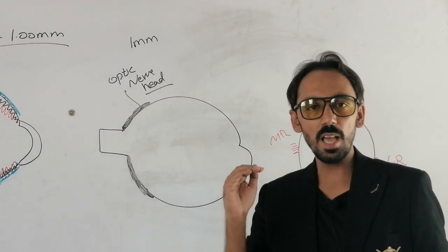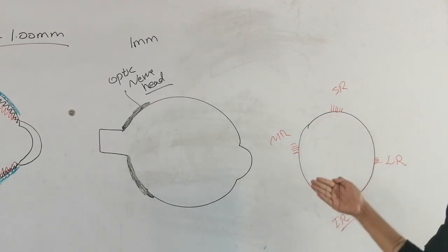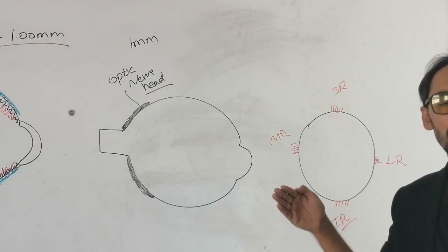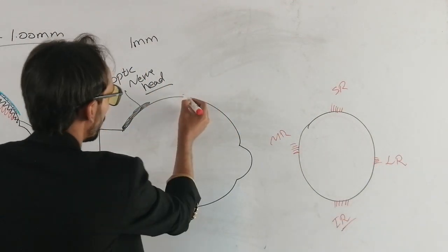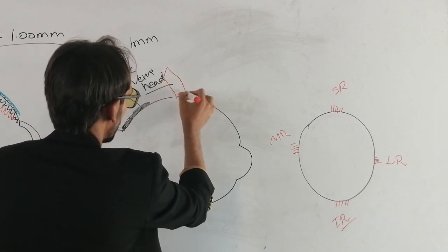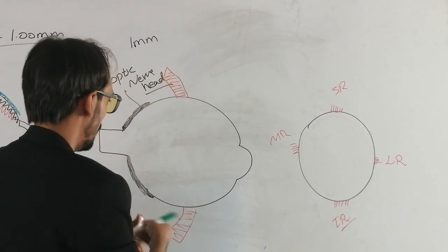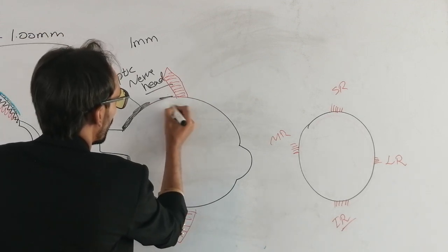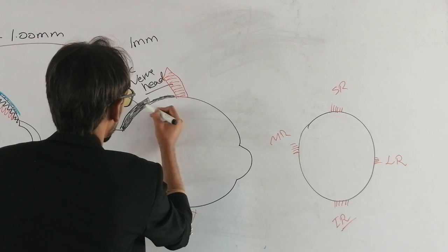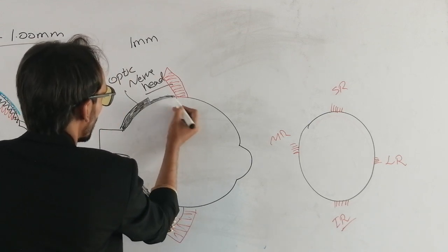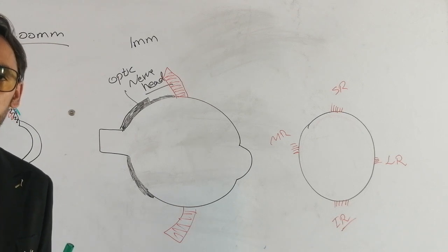So I am talking about the thinnest level of the sclera. The sclera is very thinnest at the level of the recti muscles — towards the posterior surface of the recti muscles, the sclera is very very thinnest. So if the muscle is attached here, suppose this is the recti muscle, posterior to here, this point is called the thinnest point of the sclera. The sclera is very thinnest posterior to the insertion of the recti muscles.